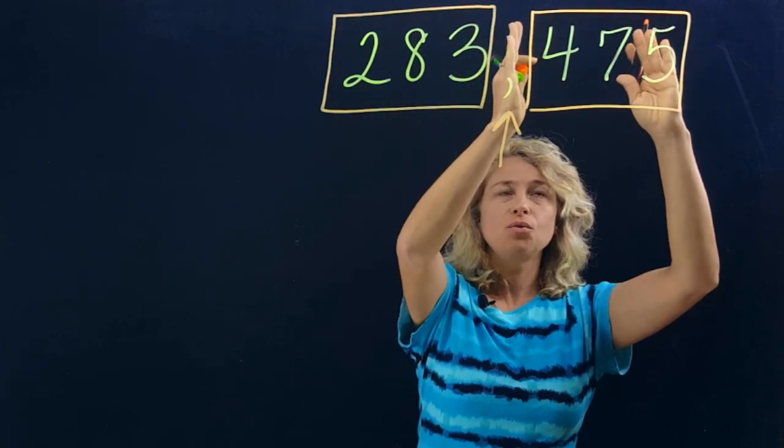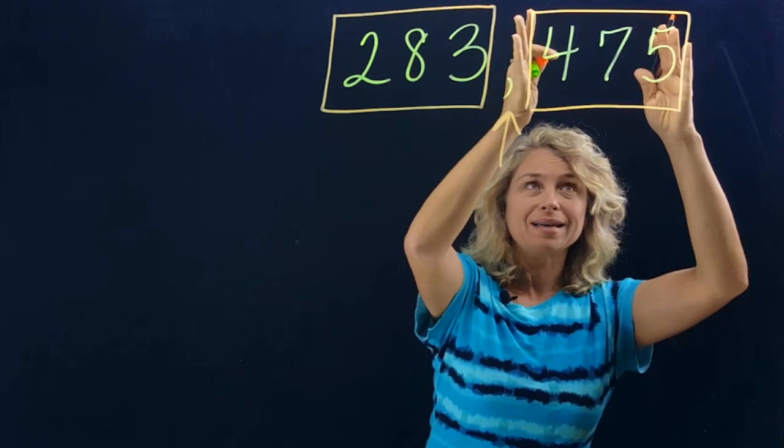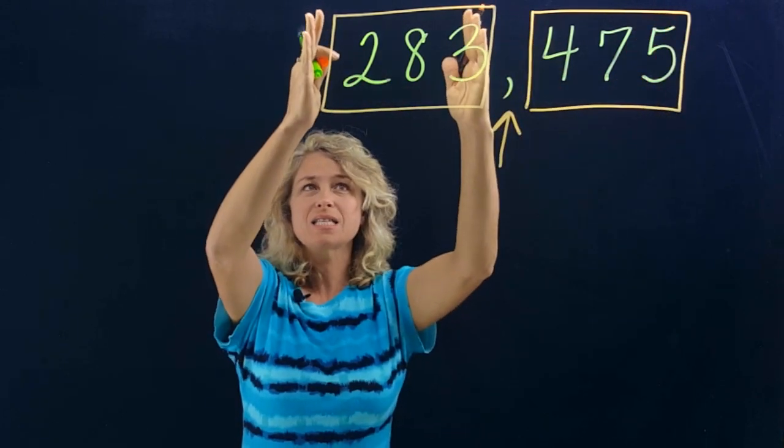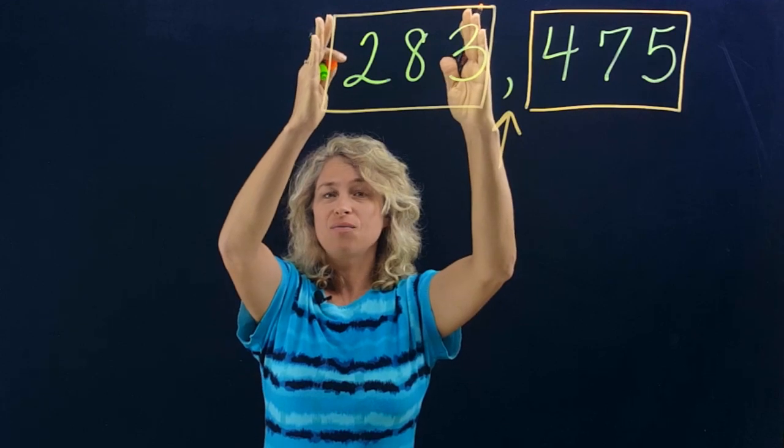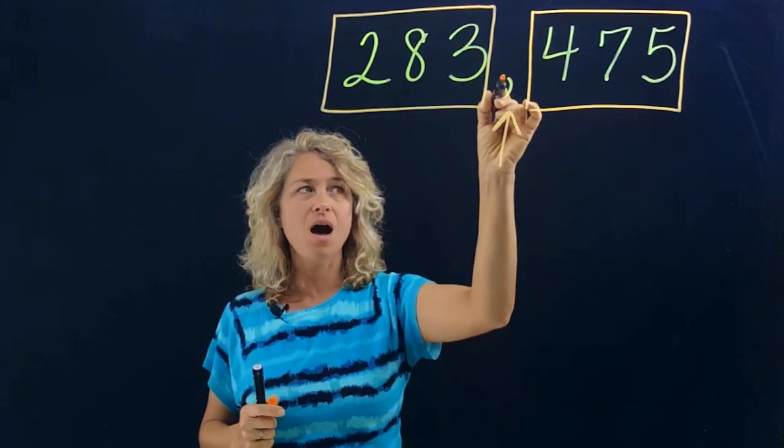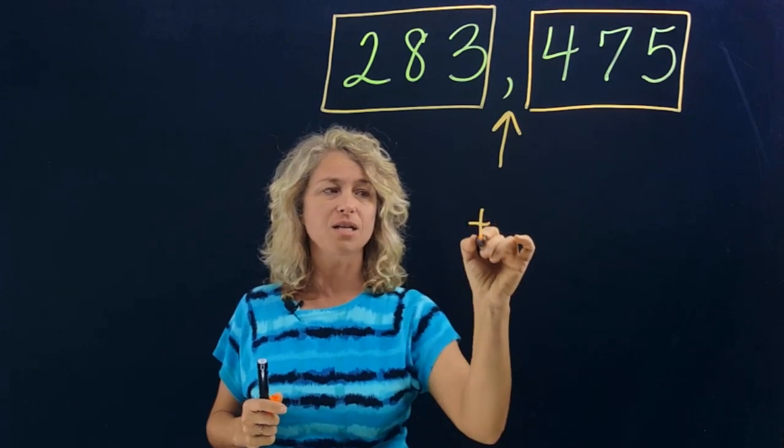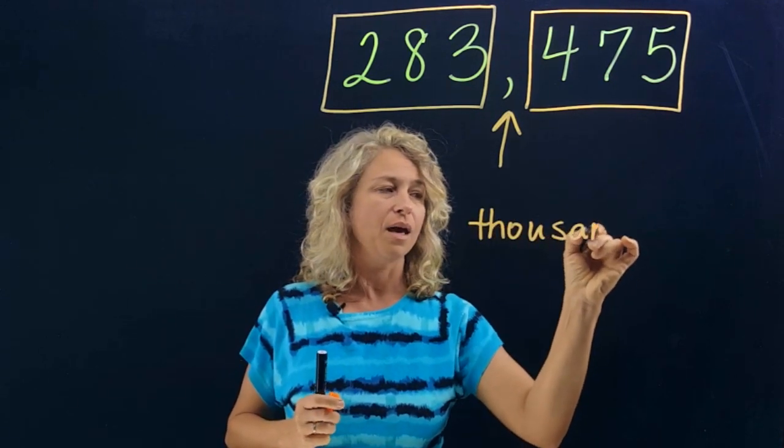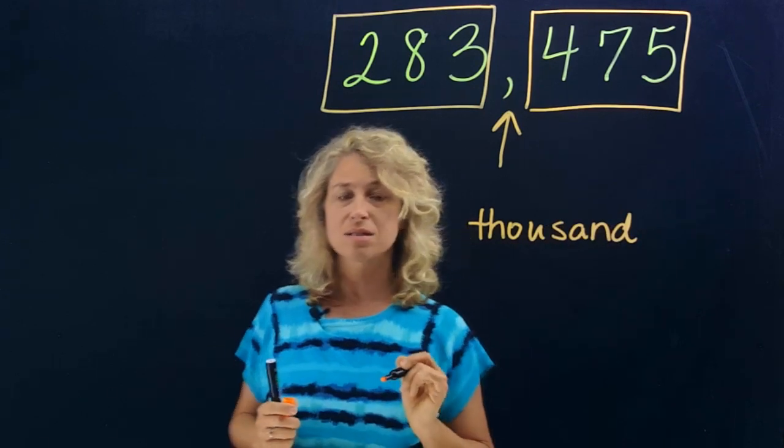If you can just say this number all by itself, you will also do great. Now this comma right here stands for a special word, and the word is thousand.